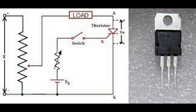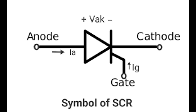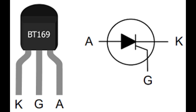AC voltage regulation: thyristors are used in AC voltage regulators to maintain a constant output voltage despite variations in input voltage or load conditions. Motor control — variable speed drives: thyristors control the speed of AC and DC motors by adjusting the voltage or current supply to the motor, crucial in industrial applications requiring precise motor speed control. Soft starters: thyristors are used in soft starter circuits to gradually ramp up the power supply to motors, reducing inrush current and mechanical stress during startup.